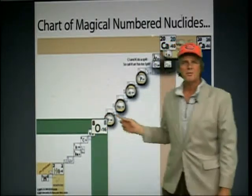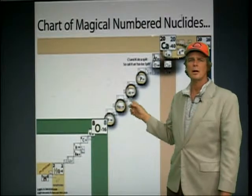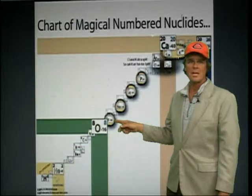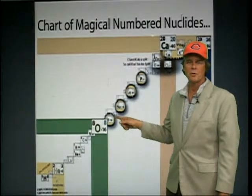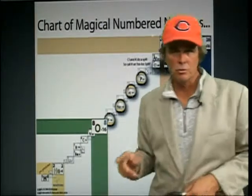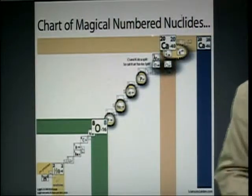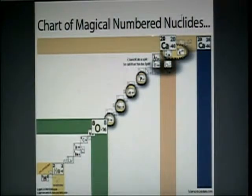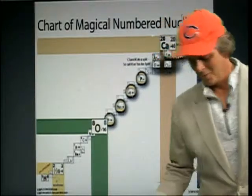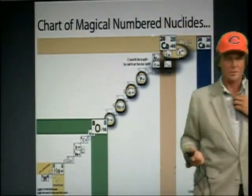Oxygen will have a 16 and a 17; carbon will have a 13 and a 14. But what these elements in between have are 100% isotopic abundances. So after neon, when you look at sodium — all the sodium atoms you find in the universe are sodium-23: 11 protons, 12 neutrons.